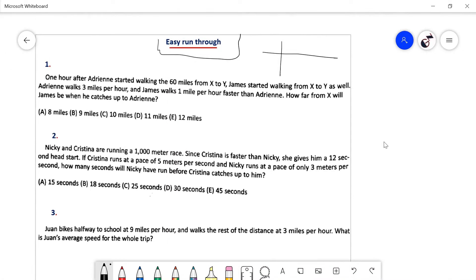Question number one. One hour after Adrienne started walking 60 miles from X to Y, James started from X to Y. One hour after Adrienne started, James started to walk. Adrienne walks 3 miles per hour, and James walks 1 mile per hour faster than Adrienne. How far from X will James be when he catches up with Adrienne, and how many times will James have walked?